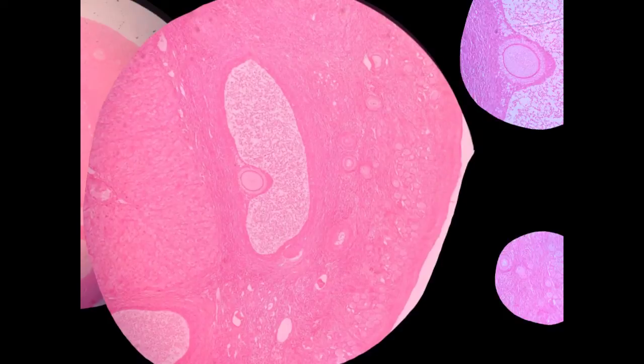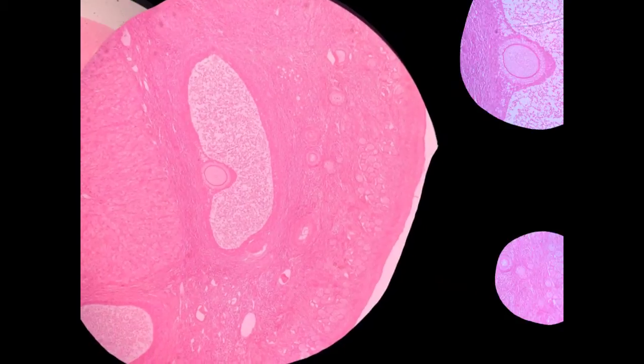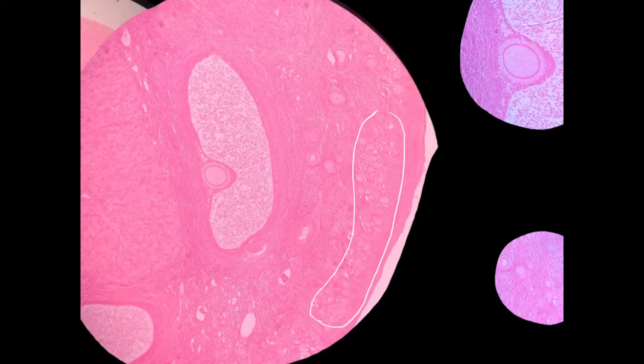The Graafian follicles are the biggest structures. In this same picture, you can see fairly well these primordial follicles all clustered right along here.